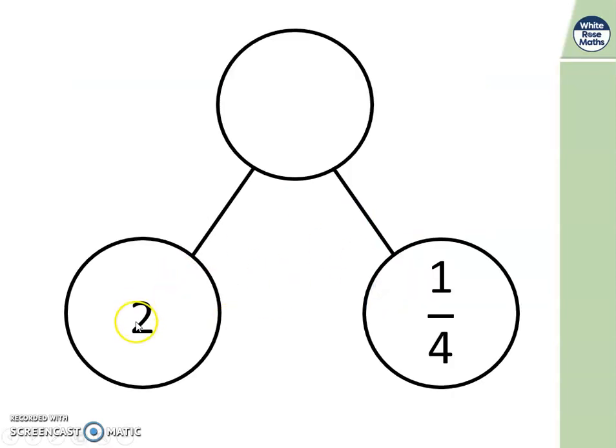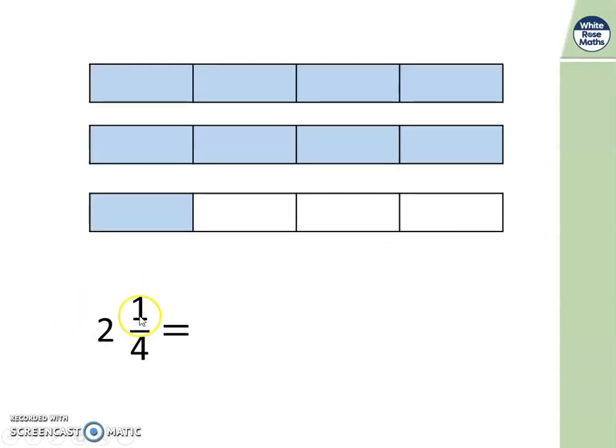Have a look here. I've got 2 whole ones and the other part is 1 quarter. How would I write that as a mixed number? That's right, 2 whole ones and 1 quarter.